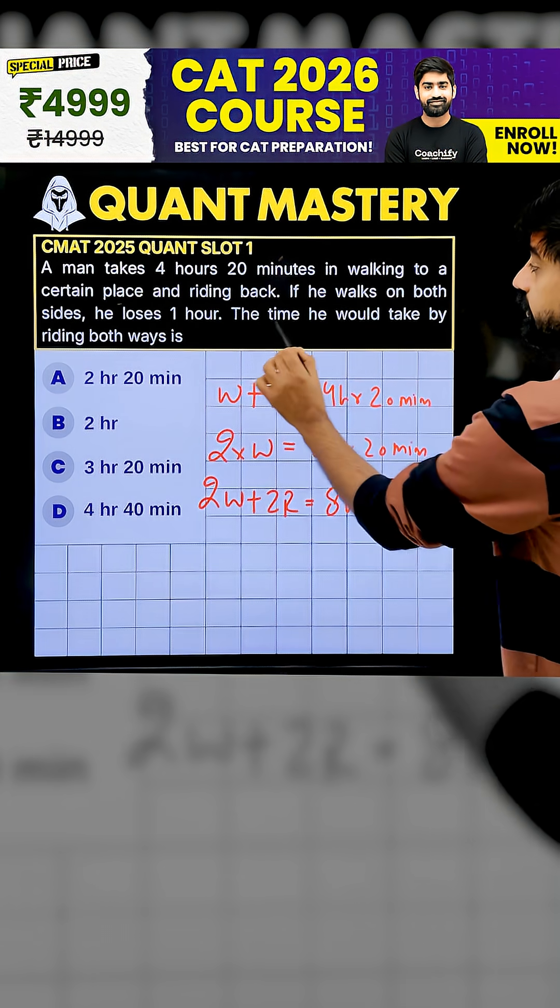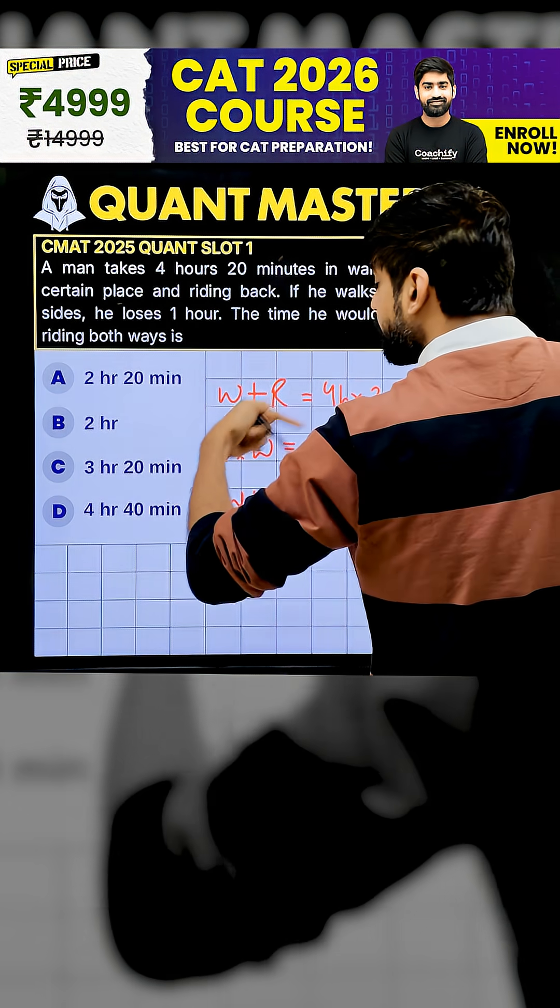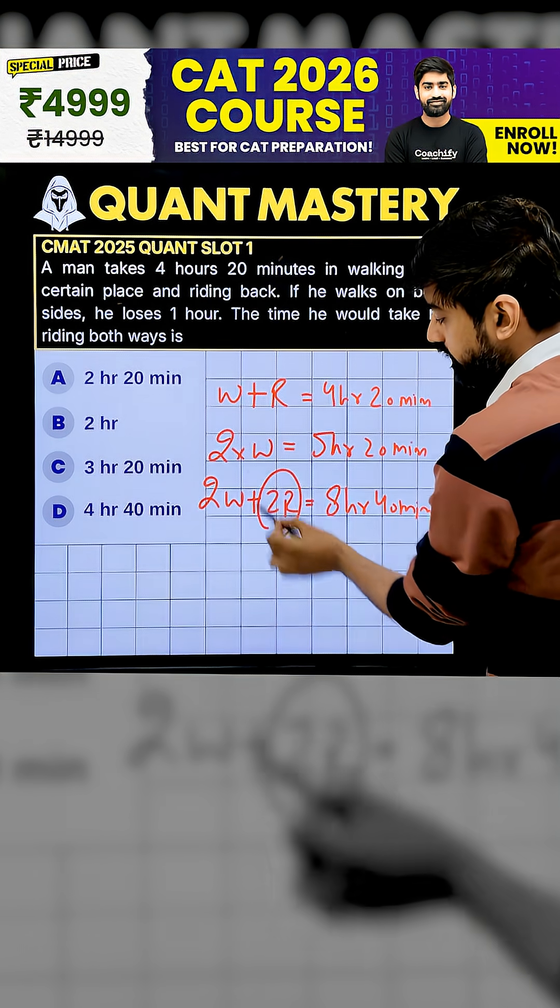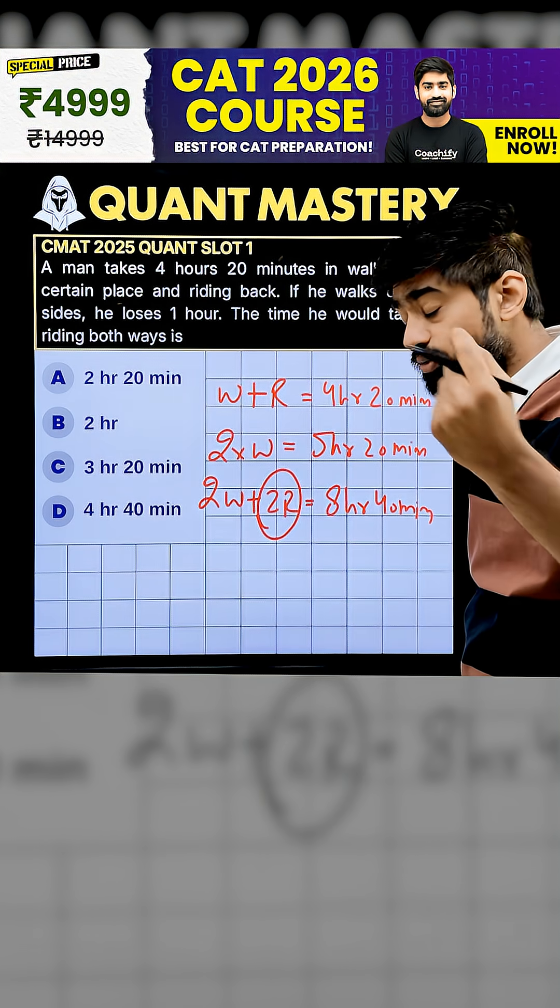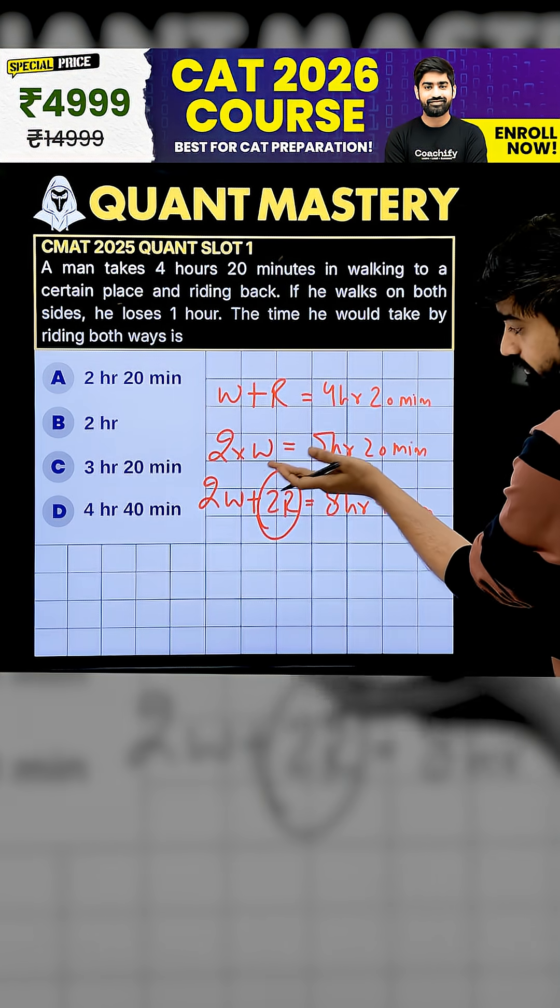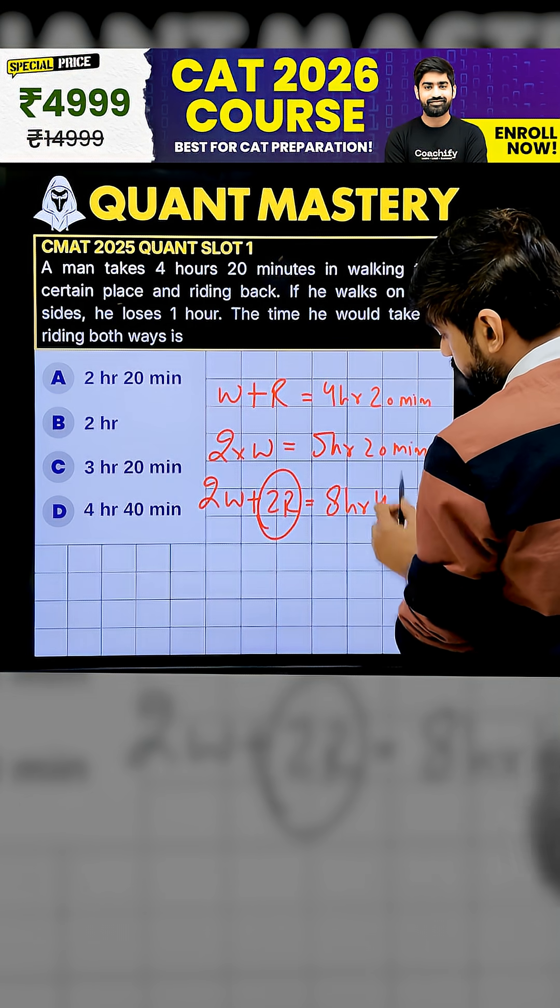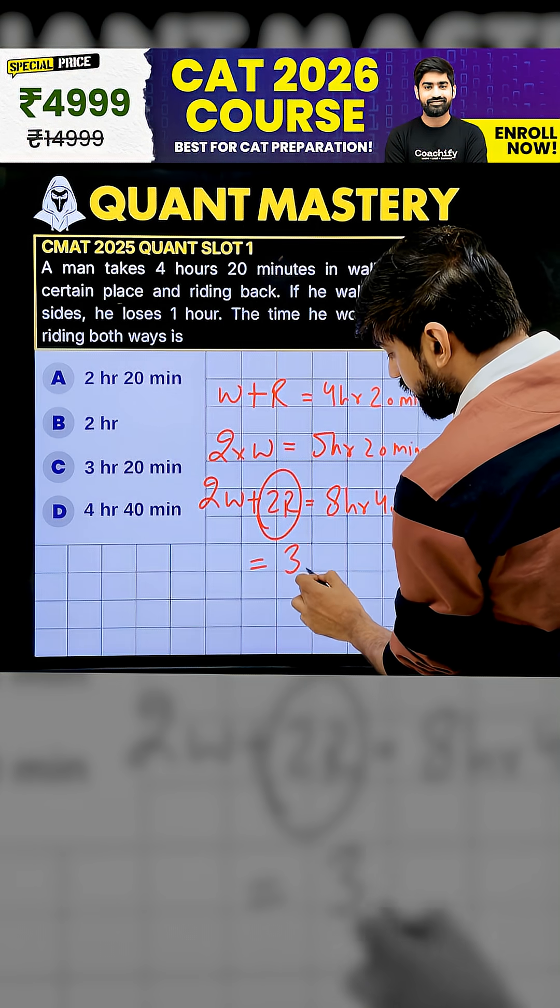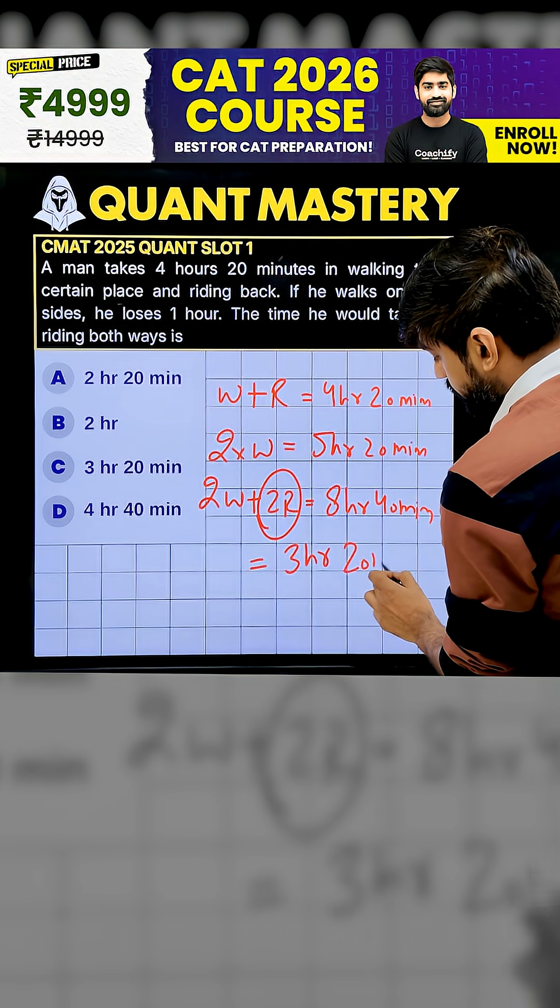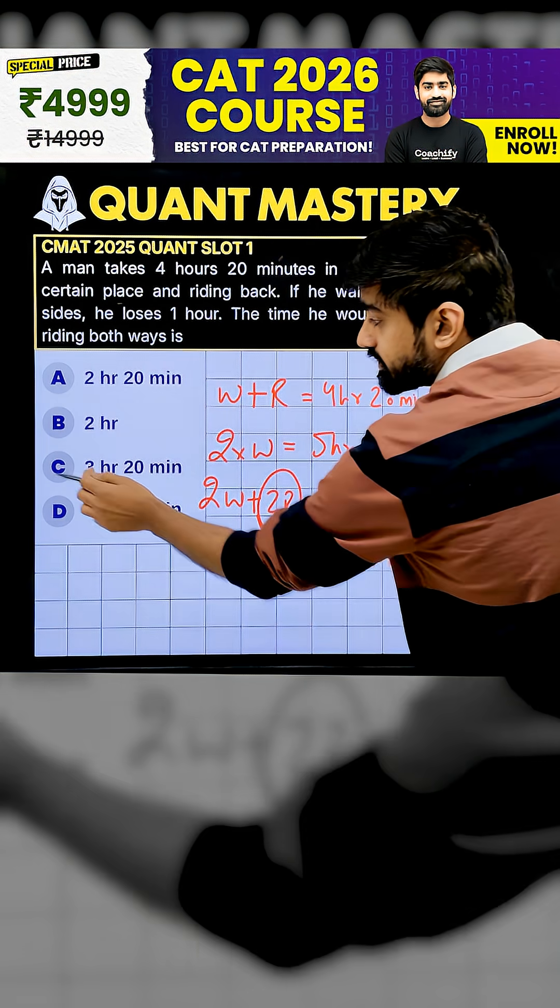Now, what is the time he would take by riding both ways? So, two times of riding corresponding time of travel, we find out. Simply, let's subtract the previous equation. So, 8 hours 40 minutes minus 5 hours 20 minutes. Correct answer is 3 hours 20 minutes. Which means C option.